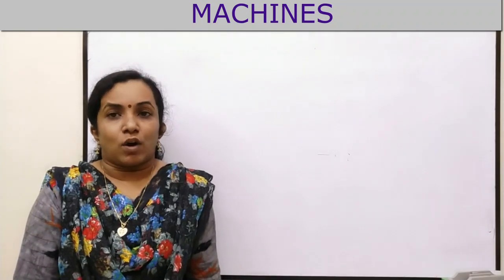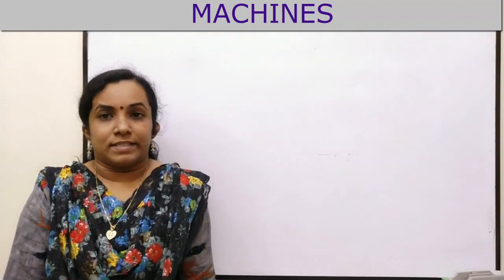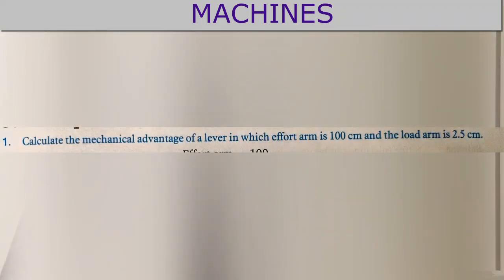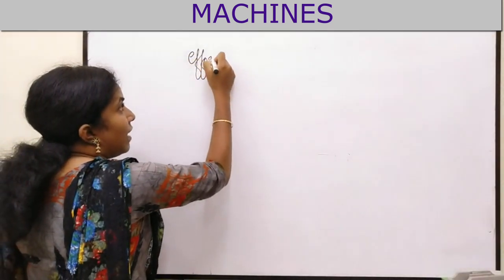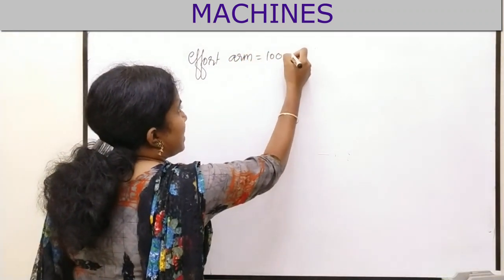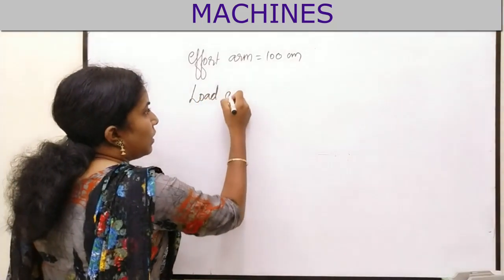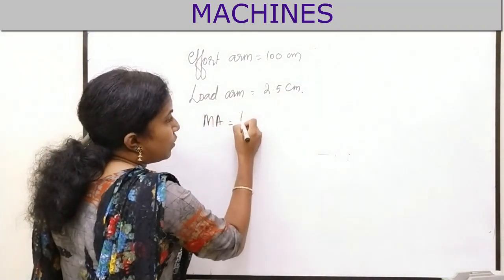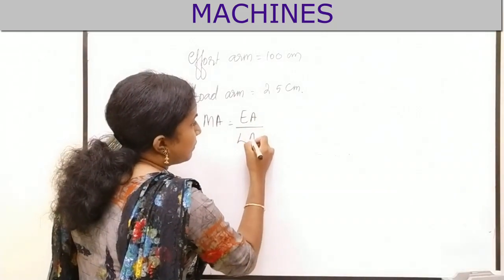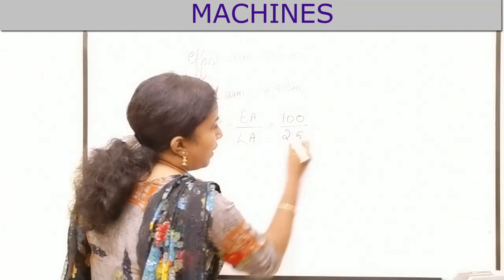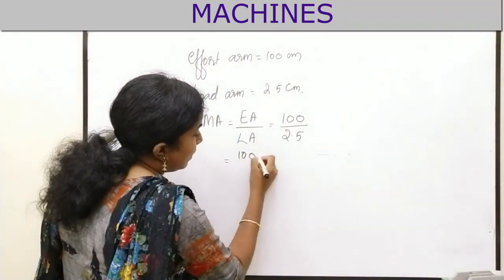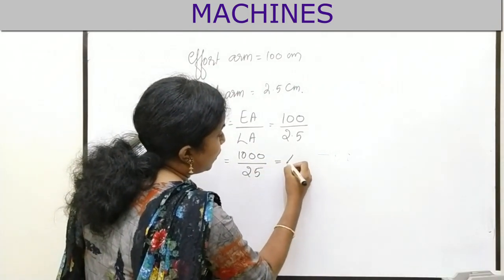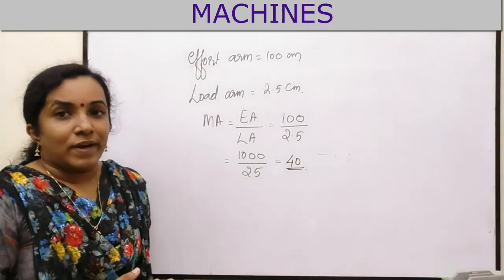To give you more clarity about the concept, I will explain some numericals. Calculate the mechanical advantage of a lever in which the effort arm is 100 cm and the load arm is 2.5 cm. Mechanical advantage equals effort arm divided by load arm, which equals 100 divided by 2.5, which equals 40. So the mechanical advantage is 40.